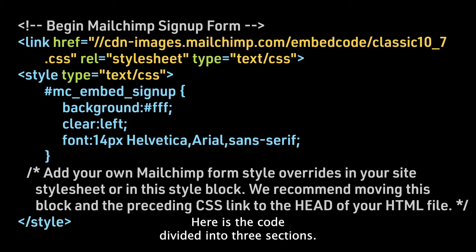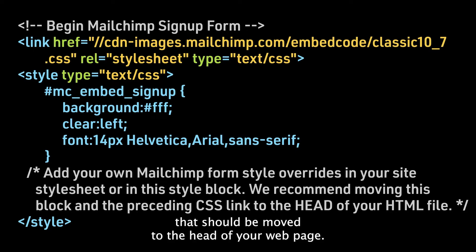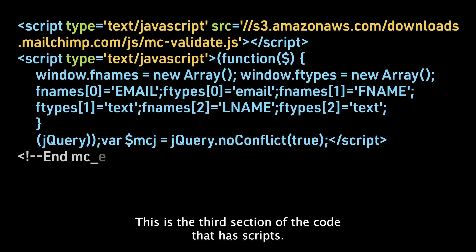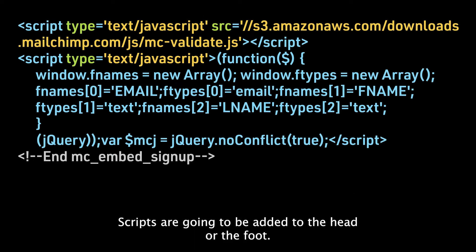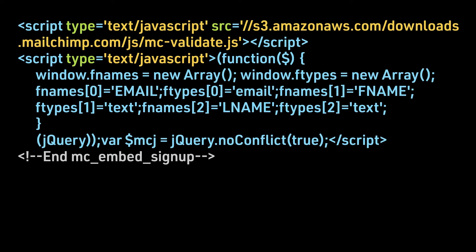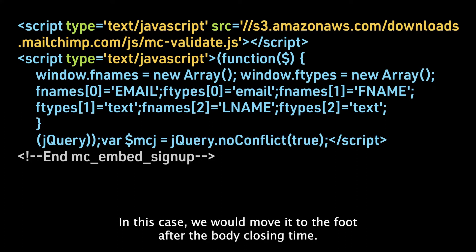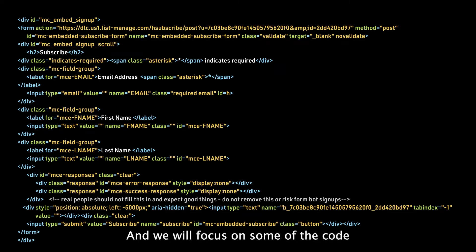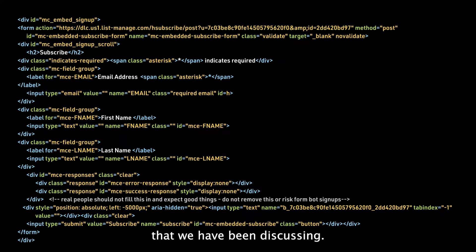Here is the code divided into three sections. In the first section, we have the links and style that should be moved to the head of your web page — it even tells you to do so in the comments. The third section of the code has scripts, which can be added to the head or the foot; in this case, we would move it to the foot after the body closing tag. The rest of the form, or the second section, will be placed where you want the form to appear on your website, and we will focus on some of the code to see some of the elements and attributes that we have been discussing.